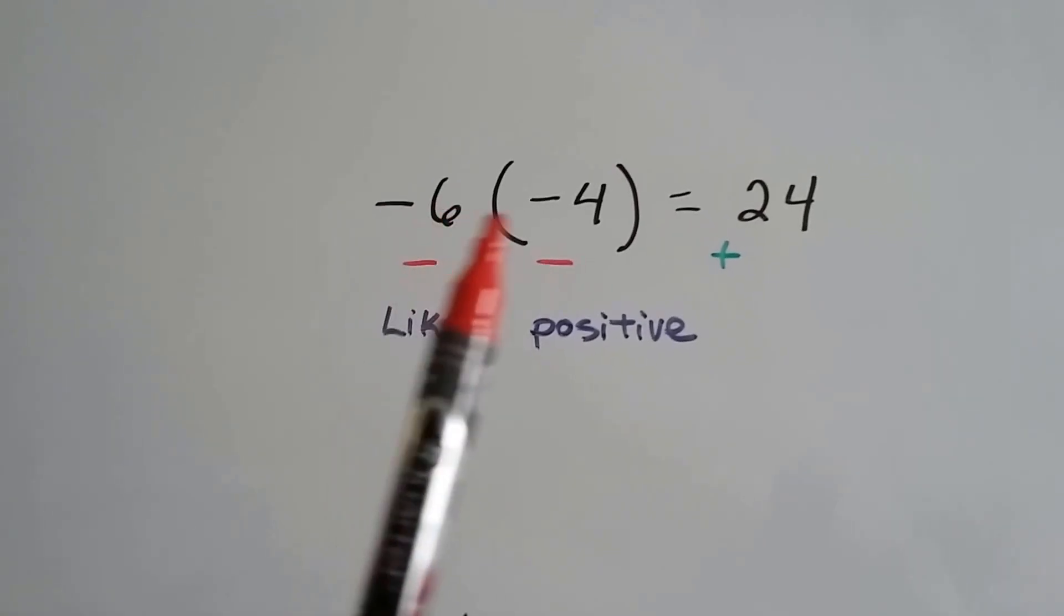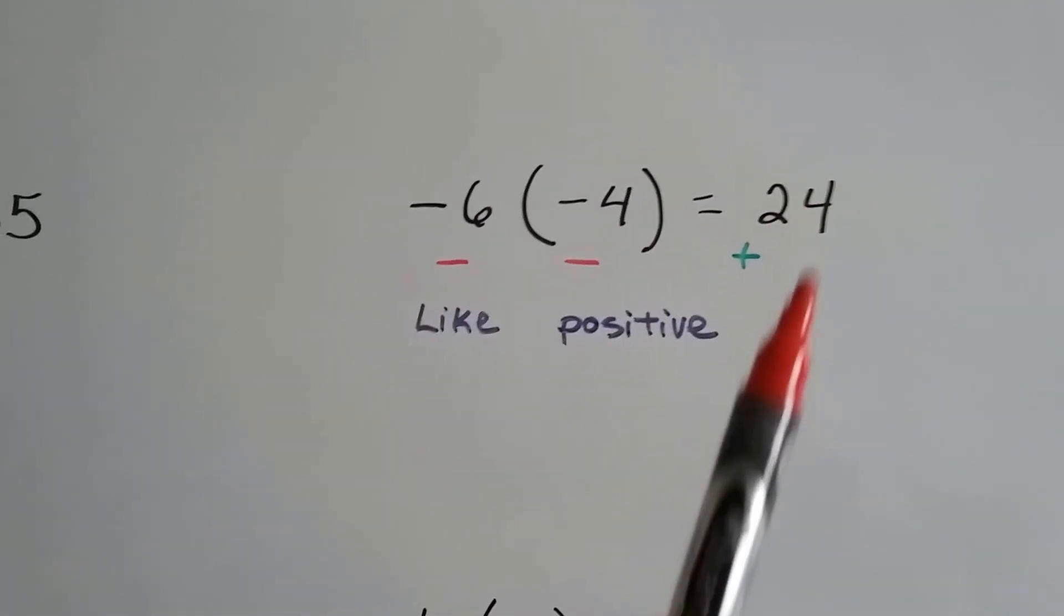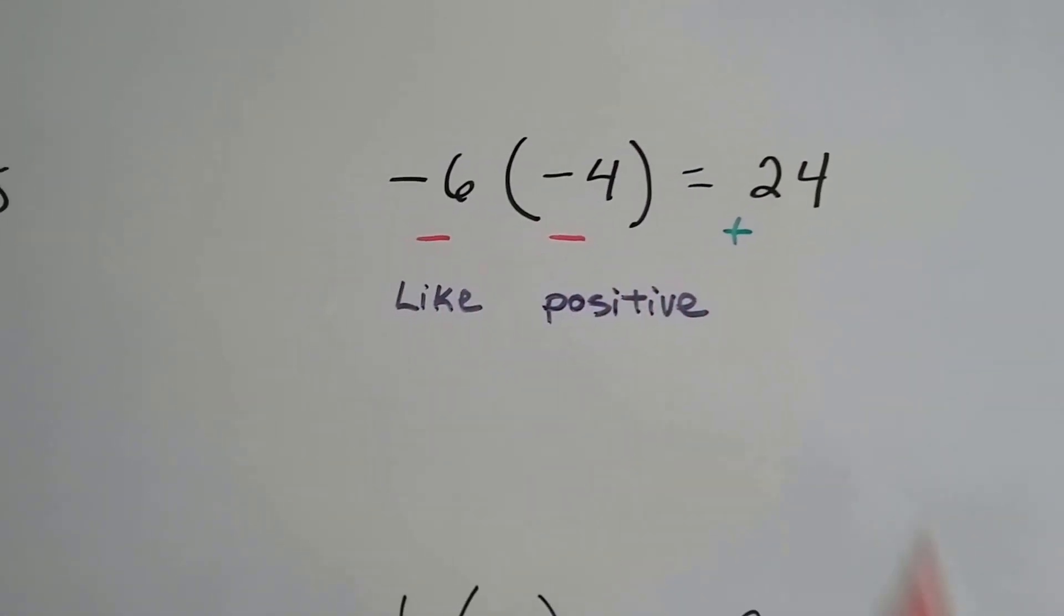We multiply and get the absolute value multiplied. 6 times 4 is 24. And because they're both the same, they're like, our answer's going to be positive.